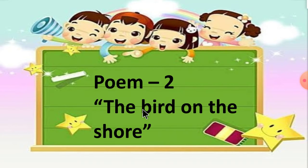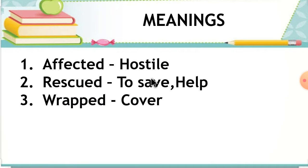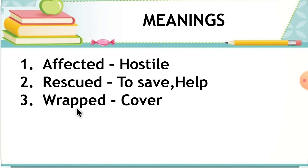Meanings of Poem 2: The Bird on the Shore. Affected means 'hostile'; Rescued means 'to save or help'; Wrapped means 'covered'.